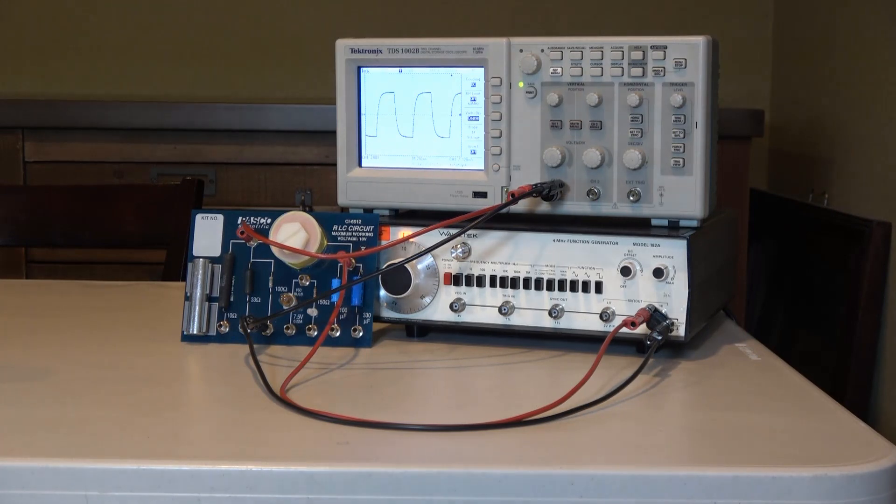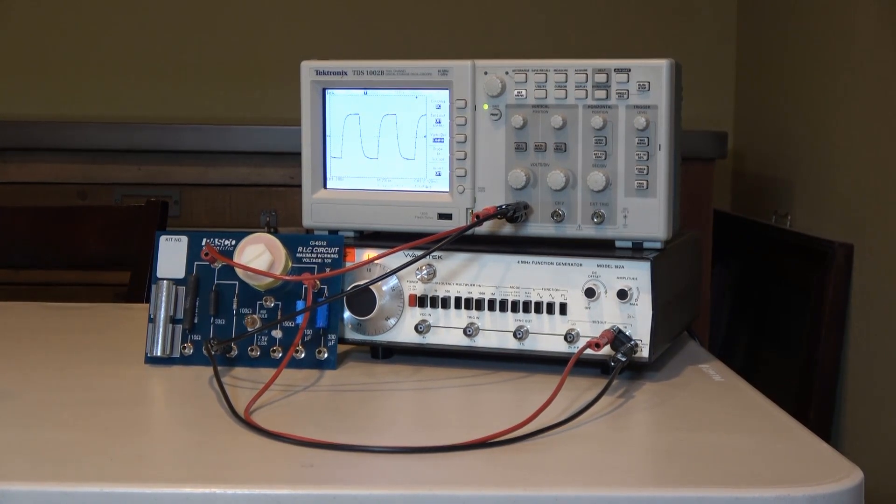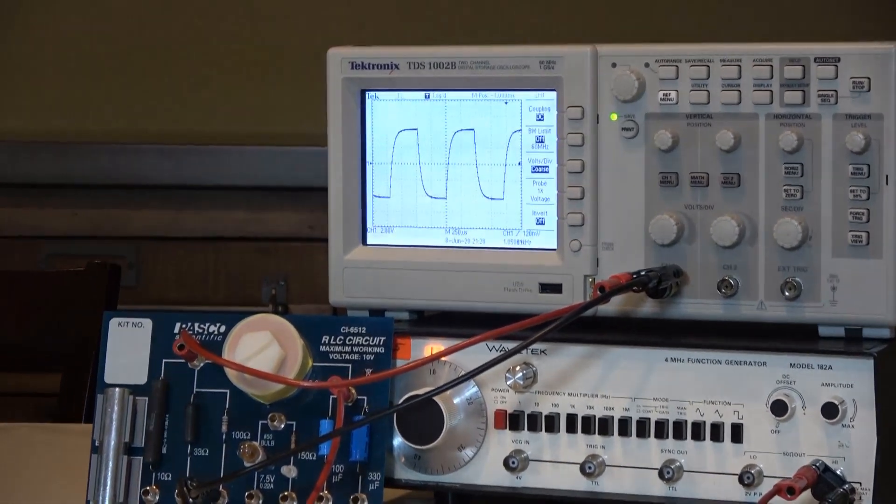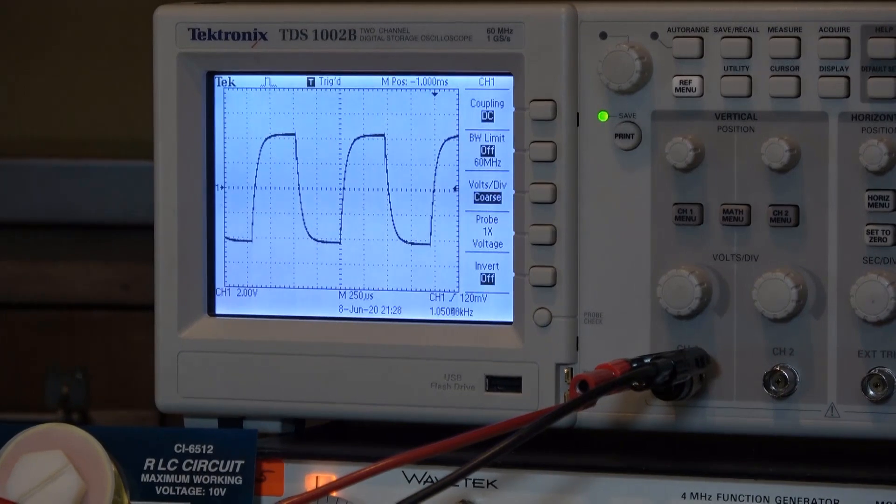Of course, we have to measure electric potential. That's what the oscilloscope is for. Here you're seeing a graph of the electric potential across the resistor as a function of time.